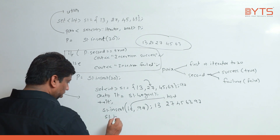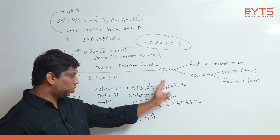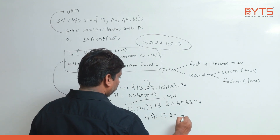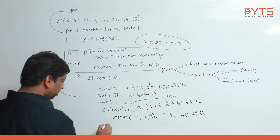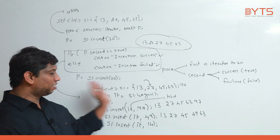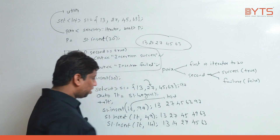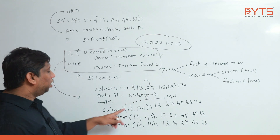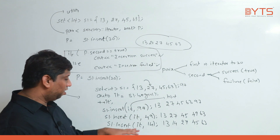For example s1.insert(it, 49): 49 is greater than 27, so it goes right and inserts in the correct position. Output: 13, 27, 45, 49, 63. For s1.insert(it, 14): 14 is less than 27, so we need to insert left side. Output: 13, 14, 27, 45, 63. The iterator it is called a hint — whether to check left side or right side — helping the insert function. This is the second version.